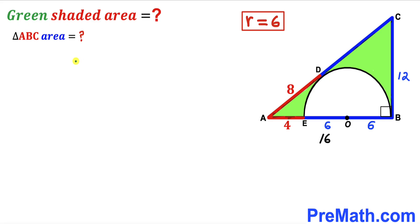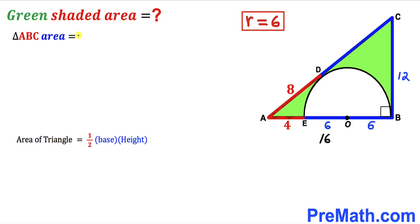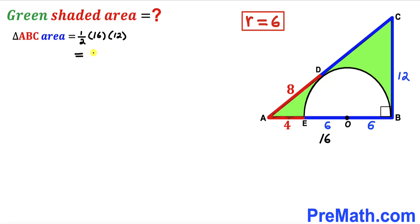Now we calculate the area of right triangle ABC. The area formula is: Area = ½ × base × height. The base of this triangle is 16 and the height is 12. So the area of triangle ABC = ½ × 16 × 12 = 96 square units.